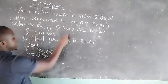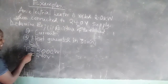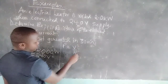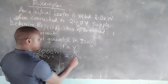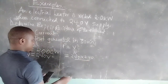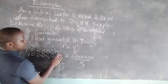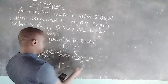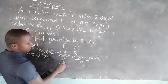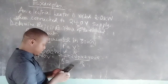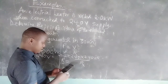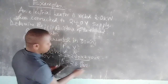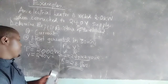We are told power is 2.0 kilowatts, which means 2,000 watts, and voltage is 240 volts. To find resistance, we need the equation P = V²/R. So: 240 × 240 divided by R equals 2,000. Rearranging, R = 240 × 240 / 2,000, which gives us 28.8 ohms. Therefore the resistance is 28.8 ohms.